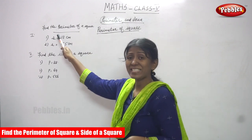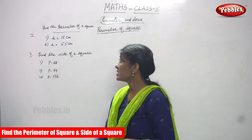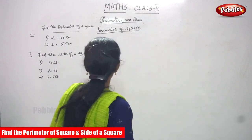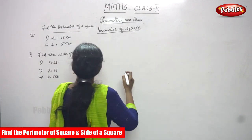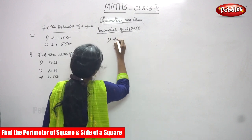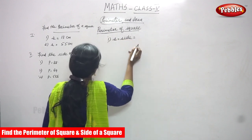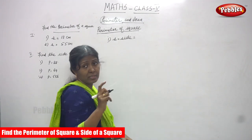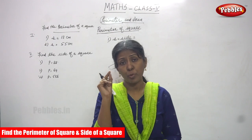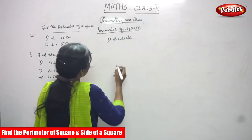So, side — S means side. Side is equal to 18 cm. Next question: side is equal to 55 cm. Now look at the sums. So first question, side — S means side. The square has four sides, so the length of only one side — length of a side — it is 18 cm.